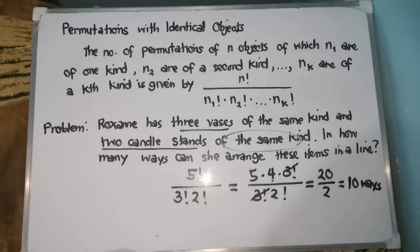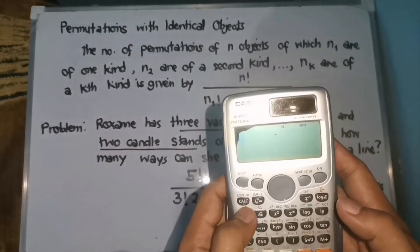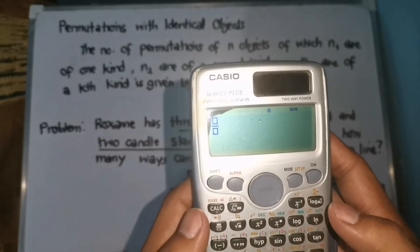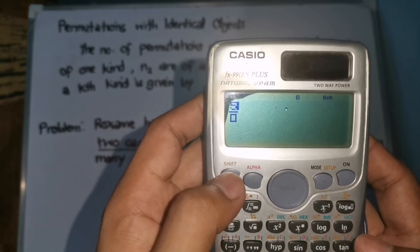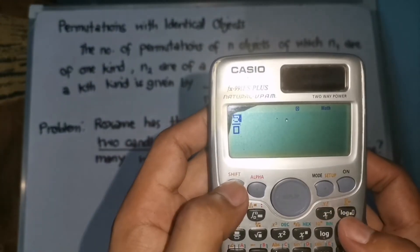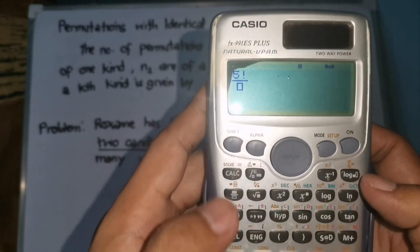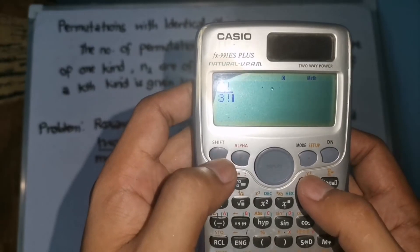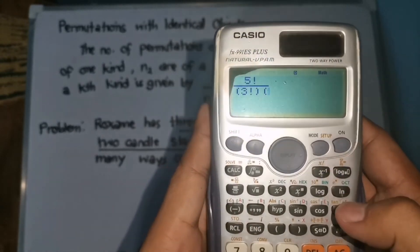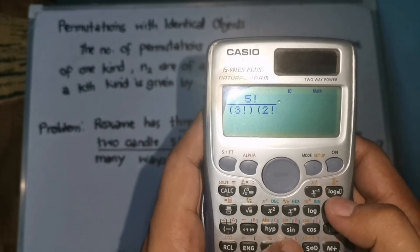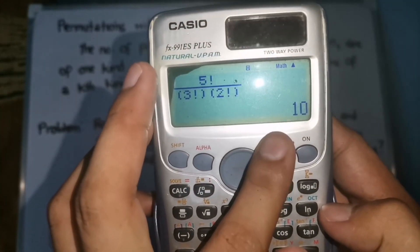To check our answer, we can link this with technology by using a scientific calculator. But mas maganda if you are going to solve it manually — i-check lang naman natin if we got the same answer. So that is 5 factorial for our numerator, then shift the x factorial. Sa denominator naman ay 3 factorial — lagyan natin ng open and close parentheses — and then times 2 factorial. So, we will get the same answer na 10. There are 10 ways.